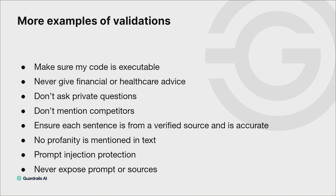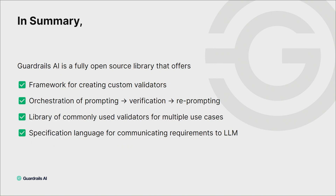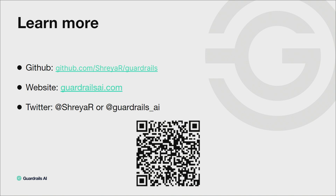More examples of validators that exist include: never giving financial or healthcare advice, making sure any code generated is usable, never asking private questions from customers or mentioning competitors, no profanity, prompt injection, and more. To summarize, Guardrails provides custom validations, orchestration of verification, a catalog of commonly used guardrails, and automatic prompt compilation from your verification checks. To follow along, you can look at the GitHub project at shreya-r/guardrails. Our website with documentation is guardrailsai.com, or you can follow me or the project on Twitter. Thank you so much, everyone.